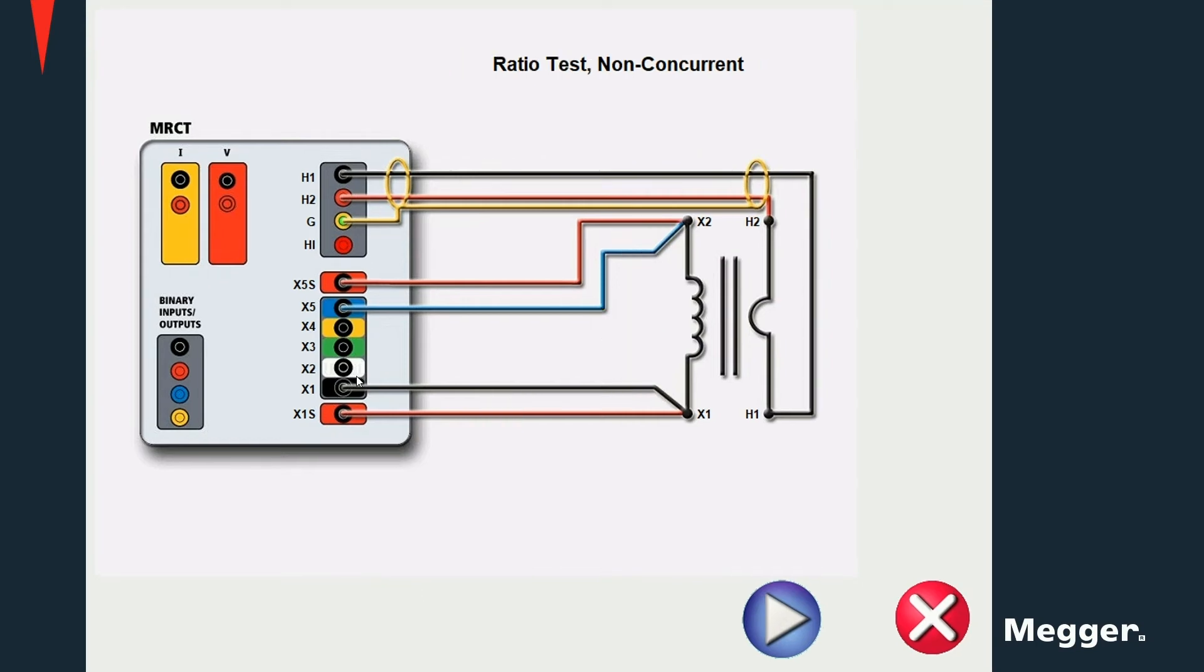For a ratio test, a voltage is injected into the secondary of the CT and measured on the primary side. And the ratio is calculated as the ratio between the voltage injected in the secondary and the voltage measured on the primary.